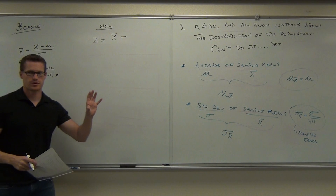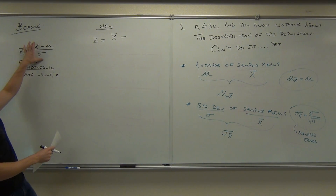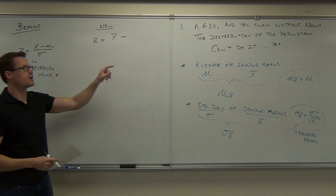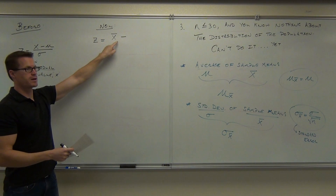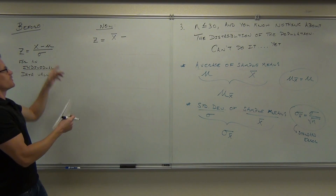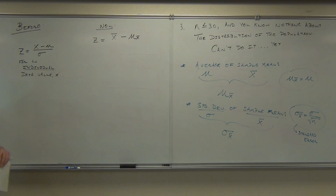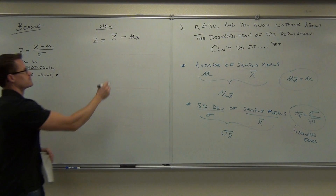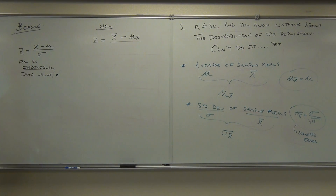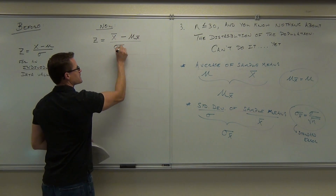Please watch carefully. I'm going to make a transition here in just a moment. Instead of x, I'm dealing with my sample means — not an individual, but a group of data. Instead of mu, I'm dealing with the average of my sample means. Instead of sigma, I'm dealing with the standard deviation of sample means.